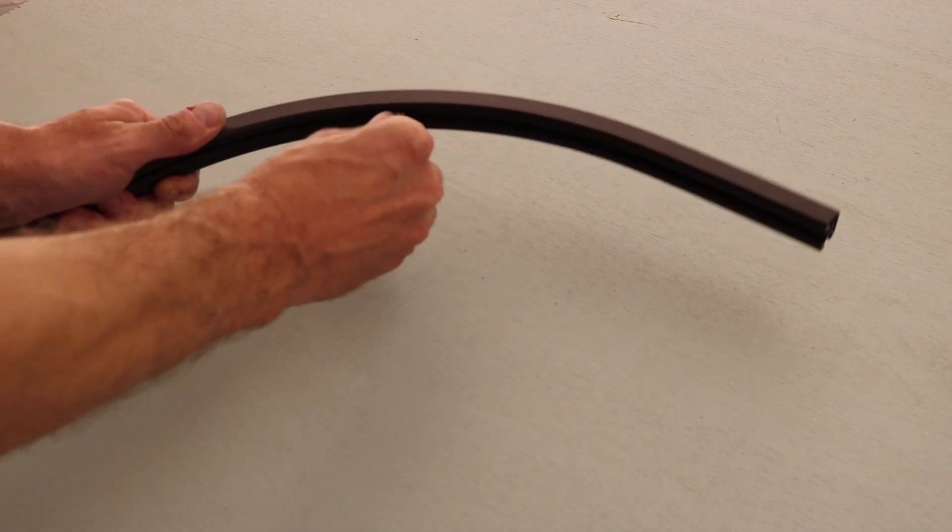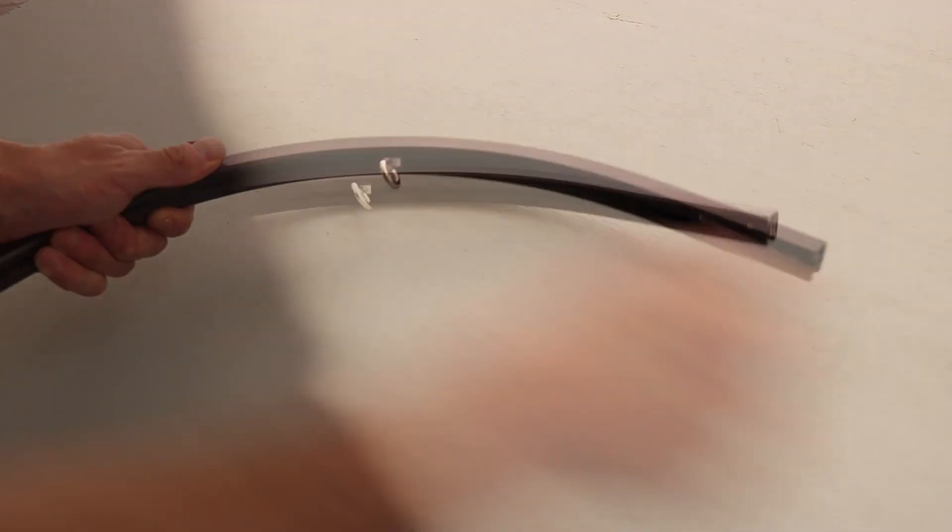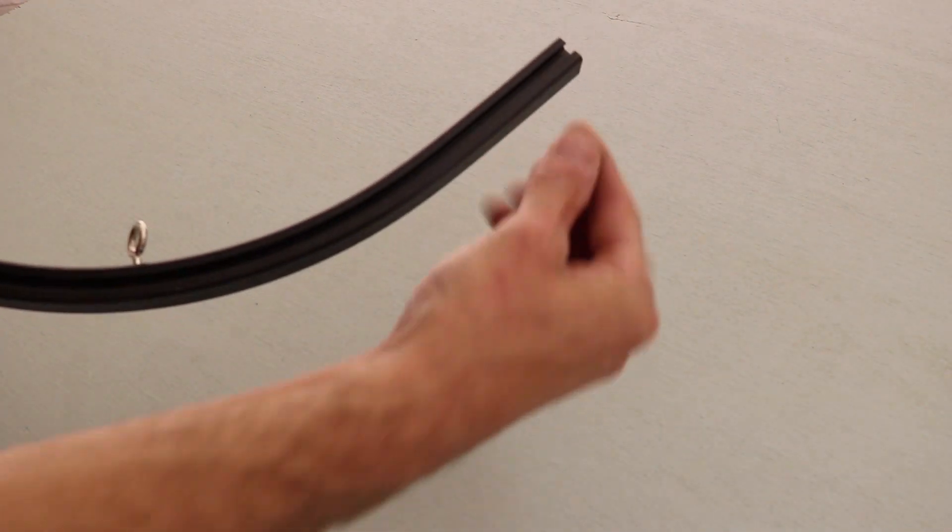We take the stainless steel eye bolts and slide them into the side T-slot section. We do this for each of the quadrants of the hanging frame.